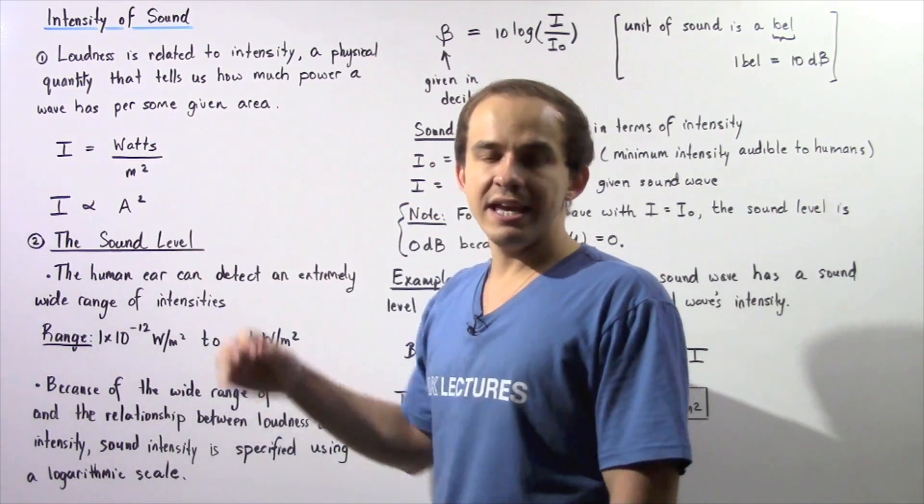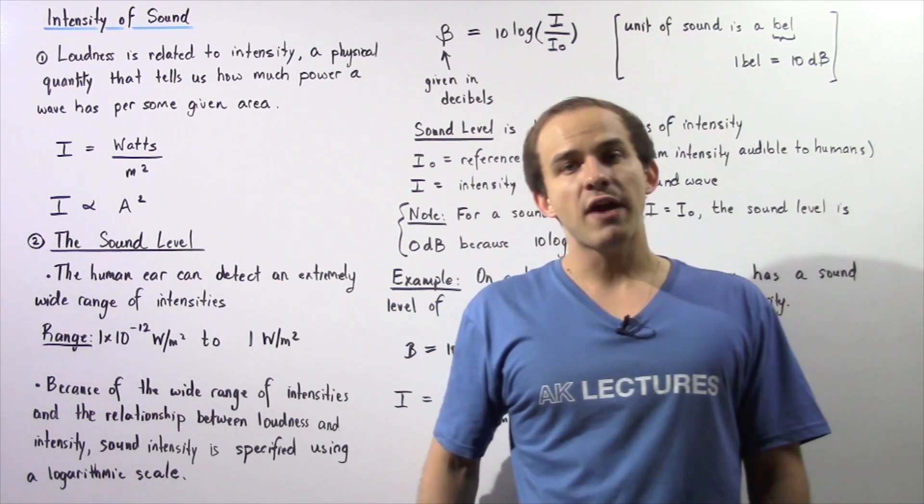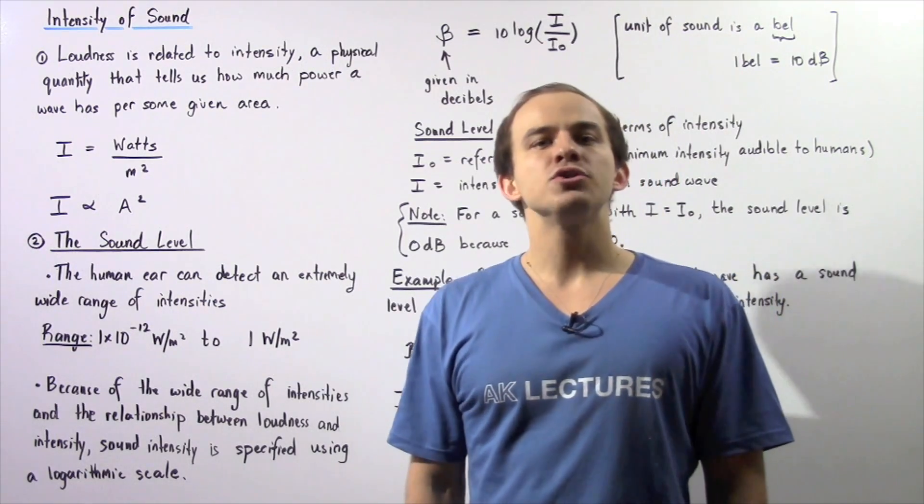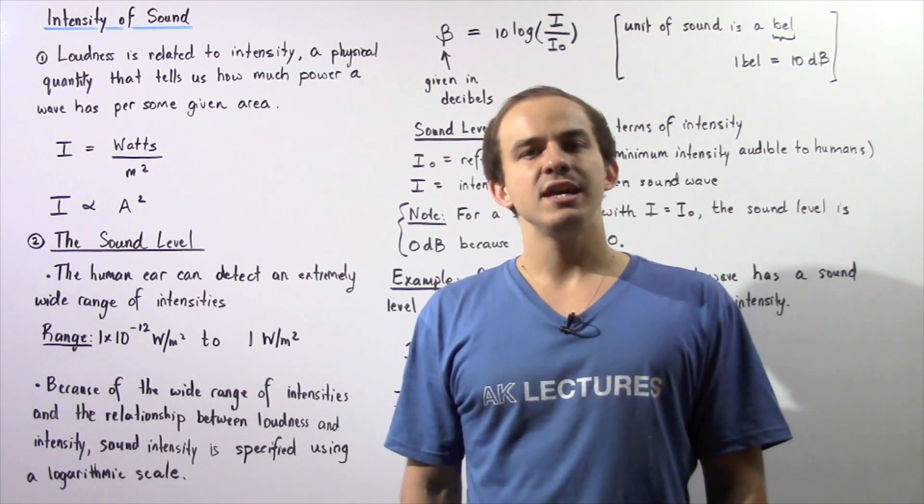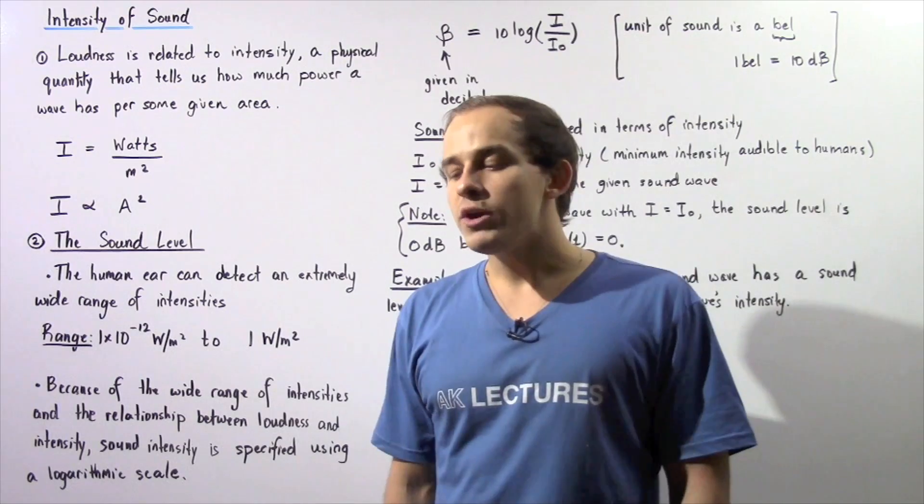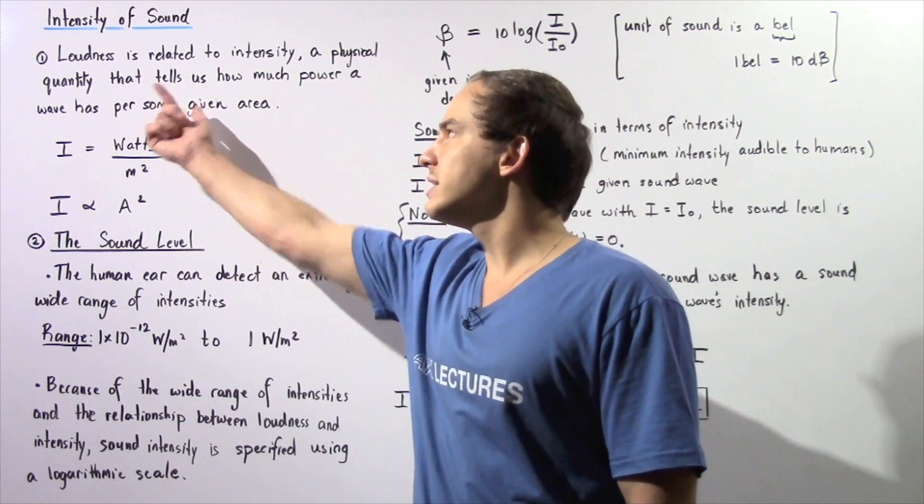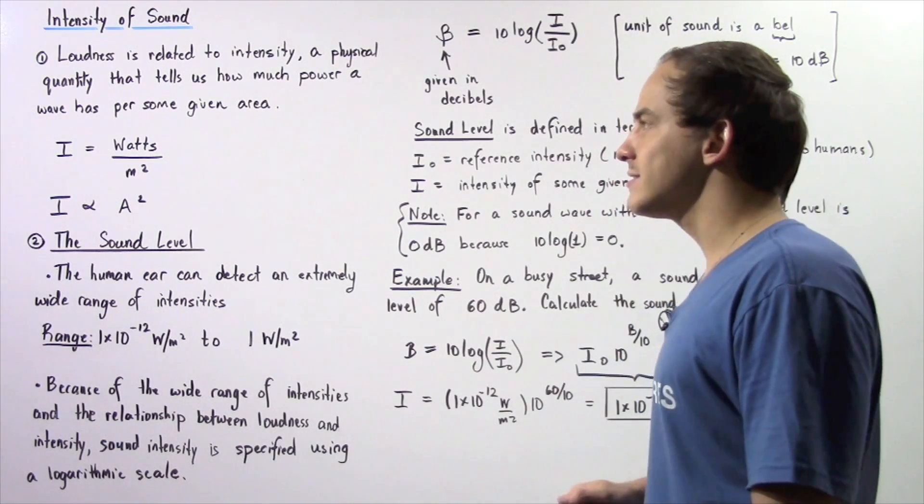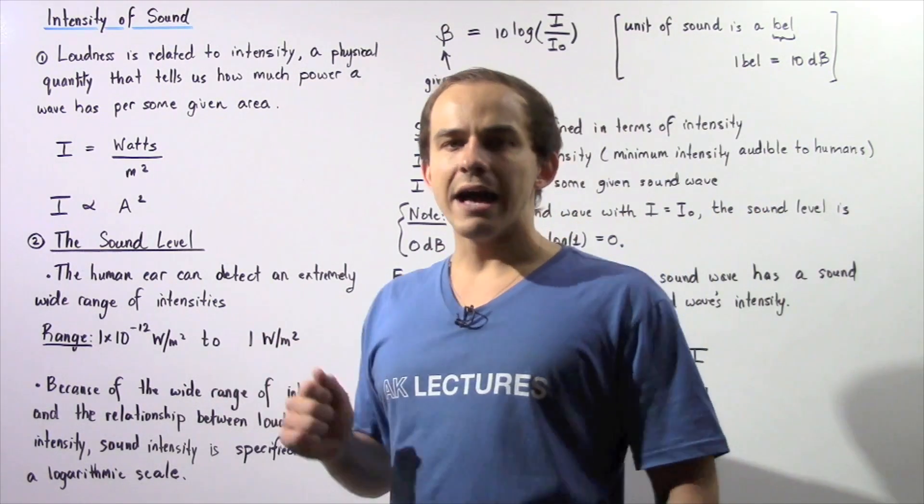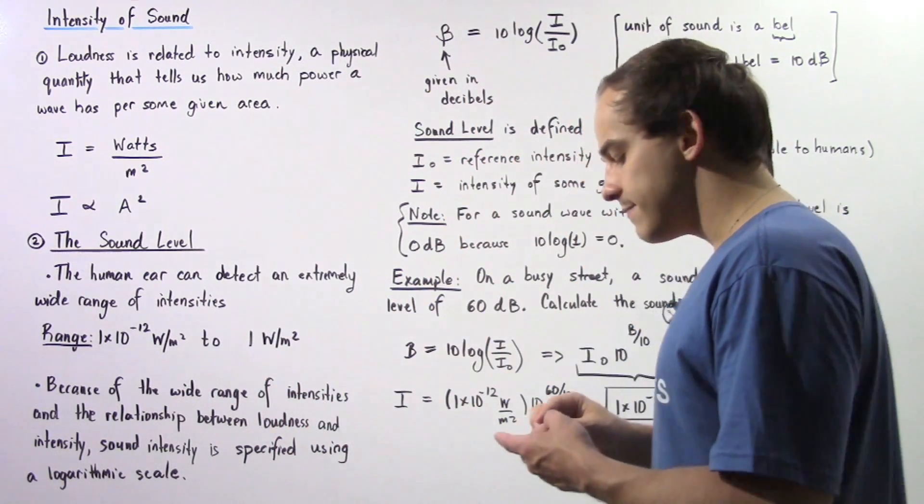If we double the amplitude of our sound wave, we quadruple the intensity of that same sound wave. If we increase the intensity of the sound wave we increase the loudness; if we decrease the intensity we decrease the loudness of that sound wave.